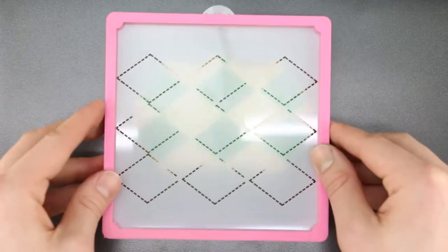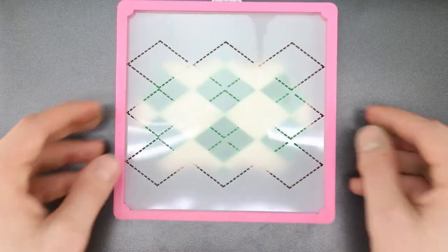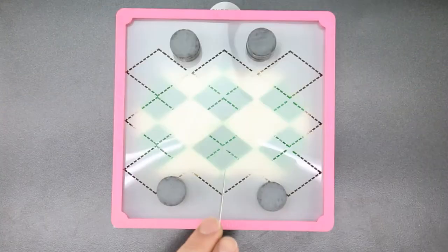Load the overlay stencil into the Stencil Genie and line it up on your cookie. Test the airflow on a piece of paper towel before airbrushing the design.